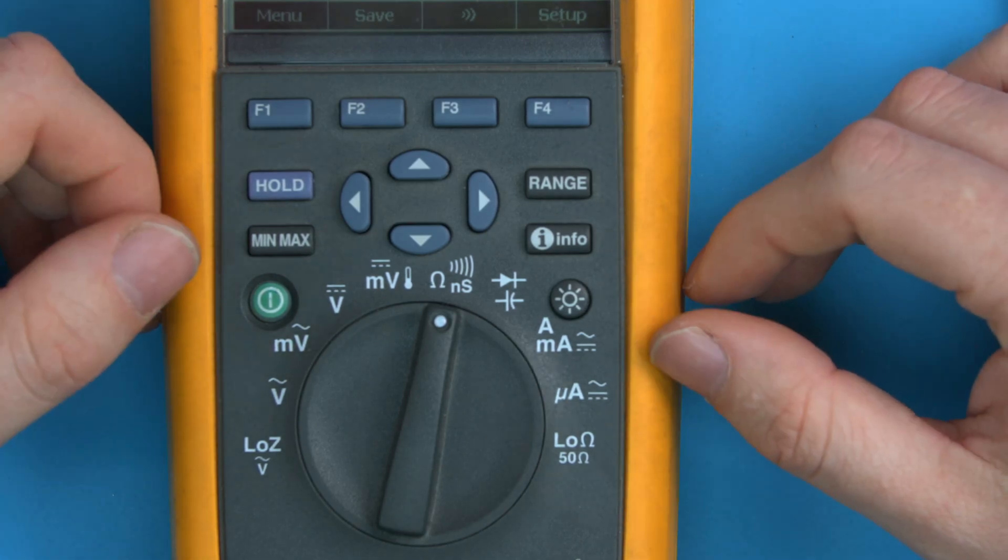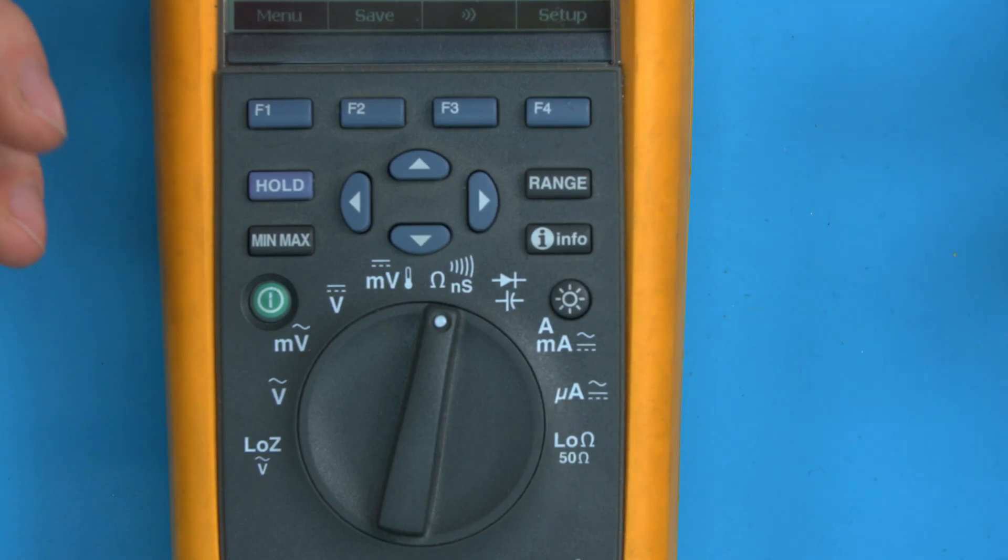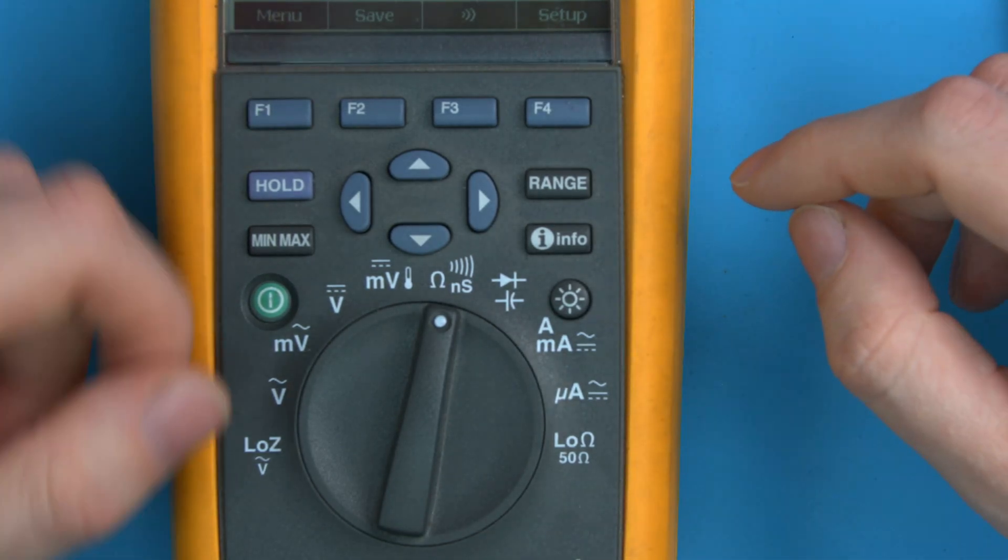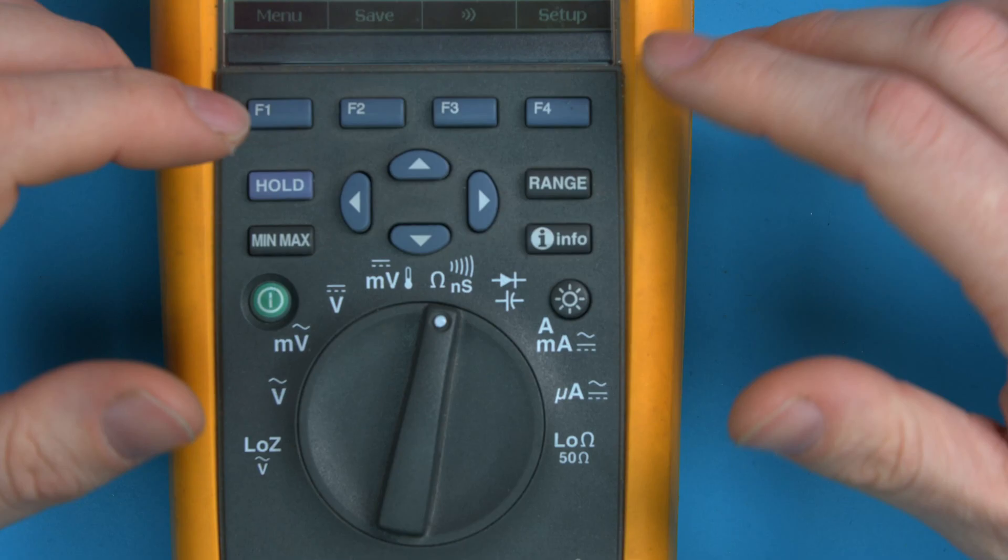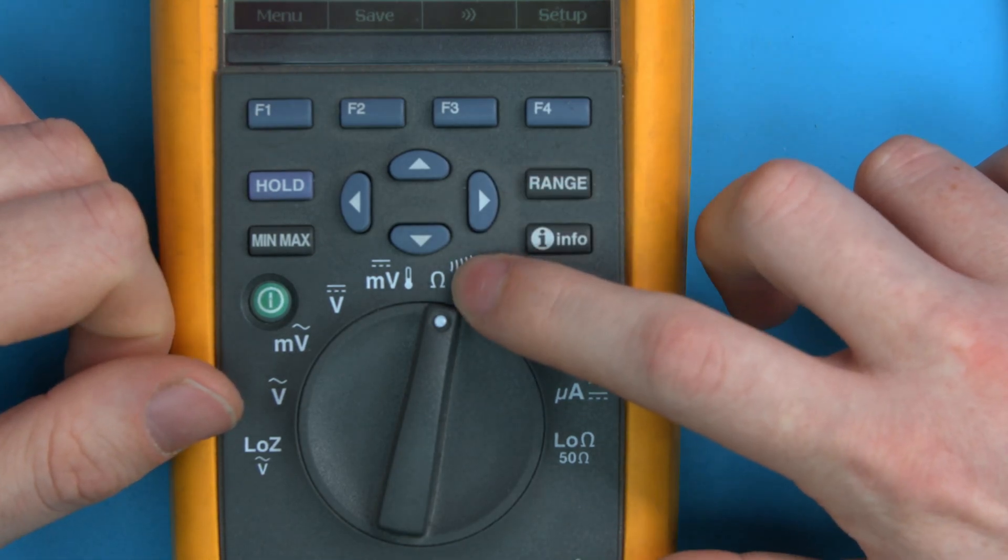So it'll be like zero ohms. The higher the resistance, the higher the number, the less current can flow through the wire. So don't get bogged down too much by detail for now, and let's focus on using the tool. But this symbol is to measure resistance.